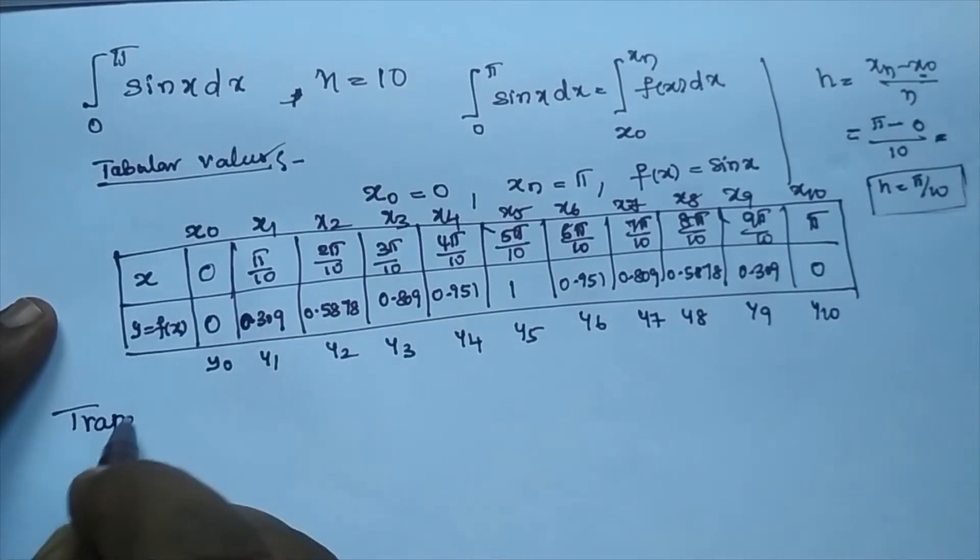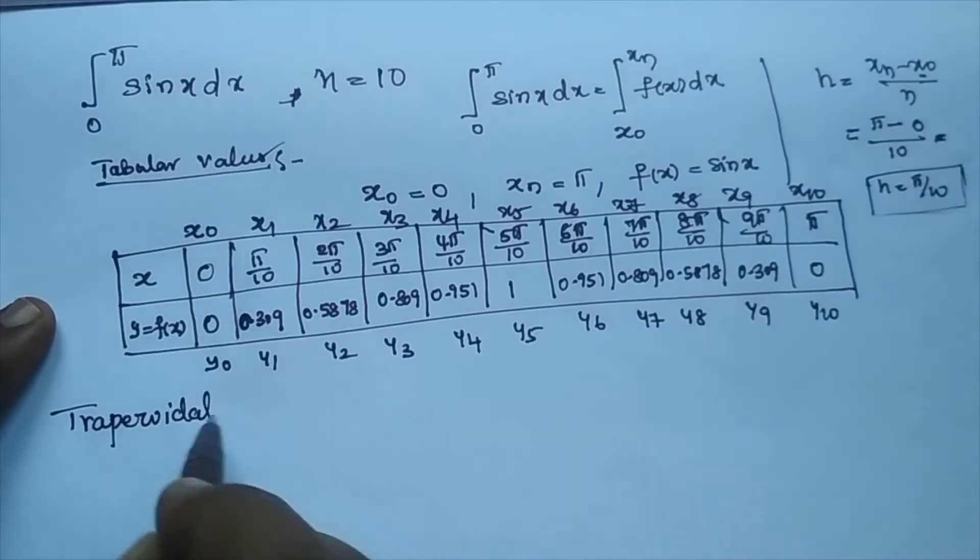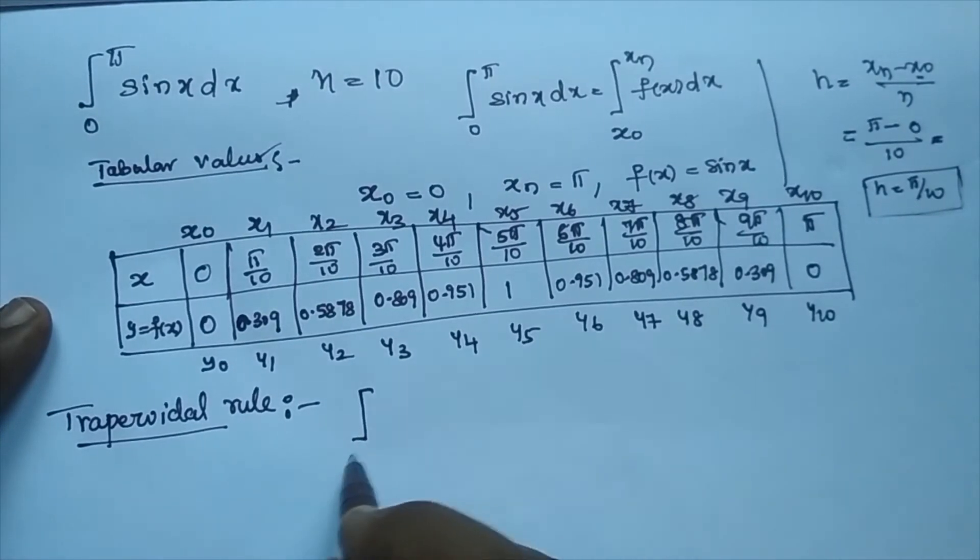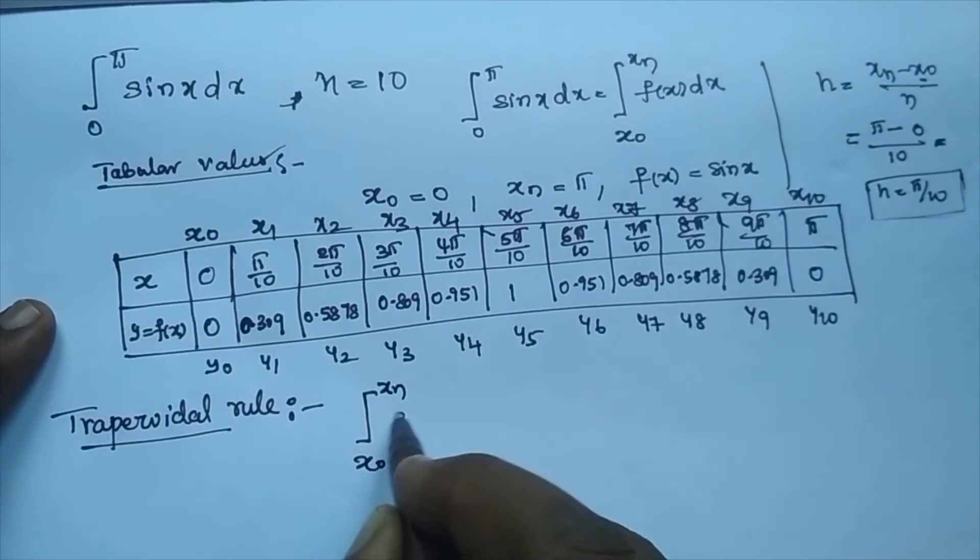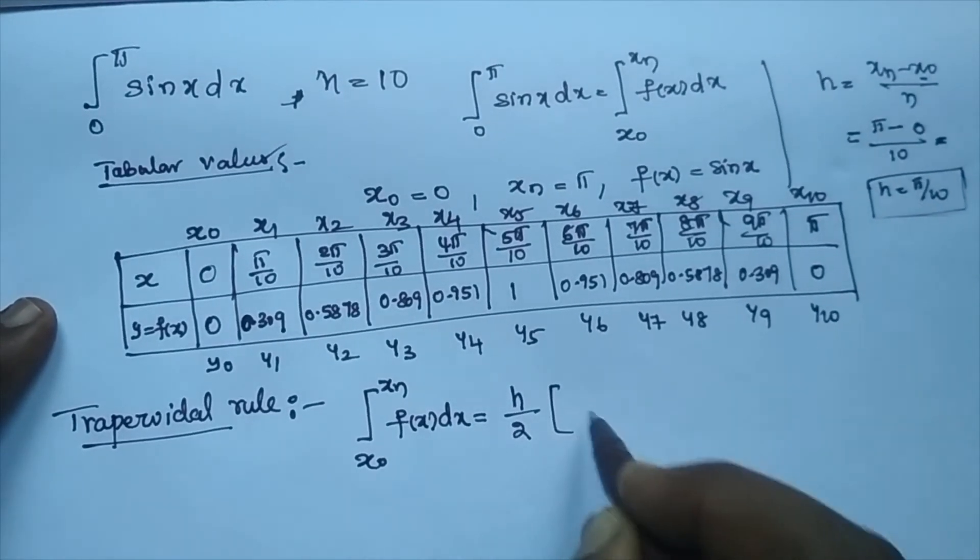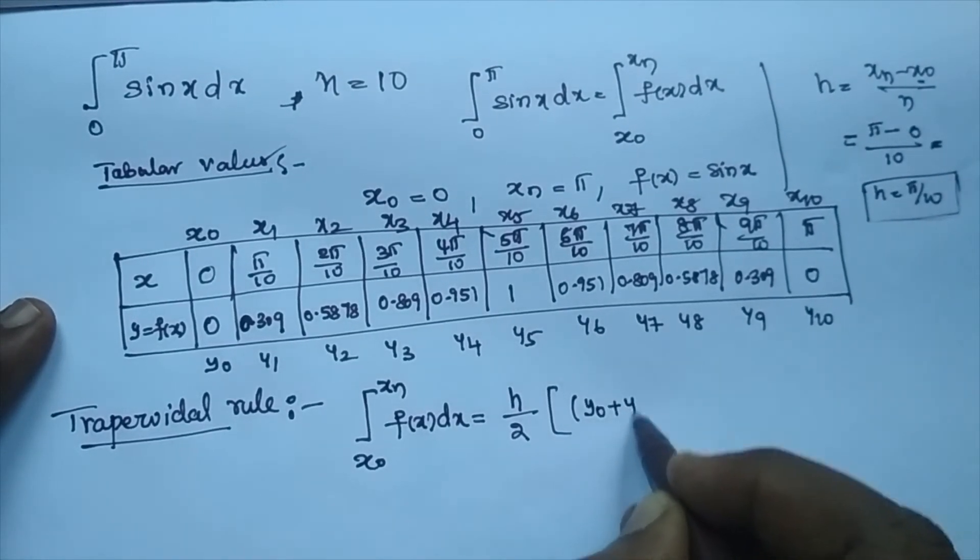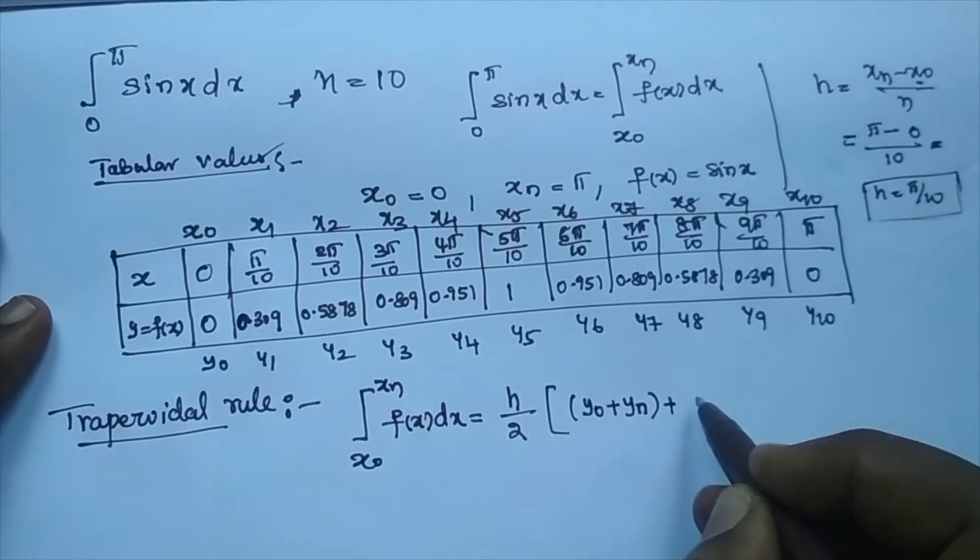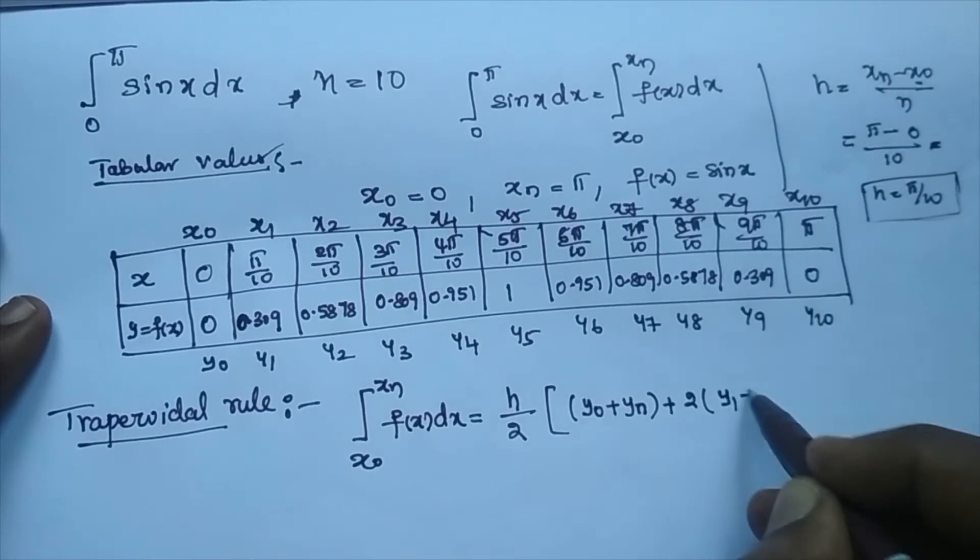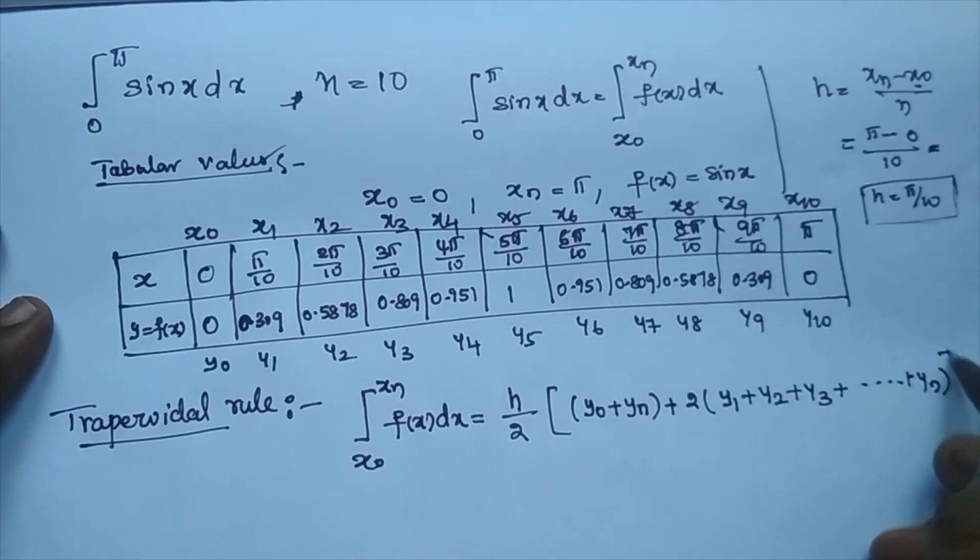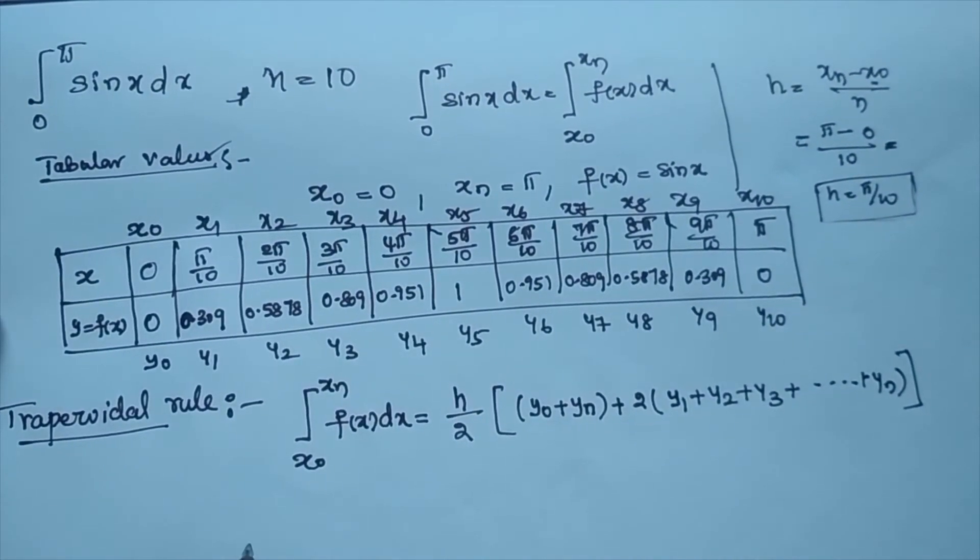So now we are going to take the trapezoidal rule, which is defined as integral x0 to xn f of x dx is equal to h by 2 into sum of first and last observation plus 2 into remaining observations: y1 plus y2 plus y3 and so on to yn minus 1. This is the formula for trapezoid. Very simple.